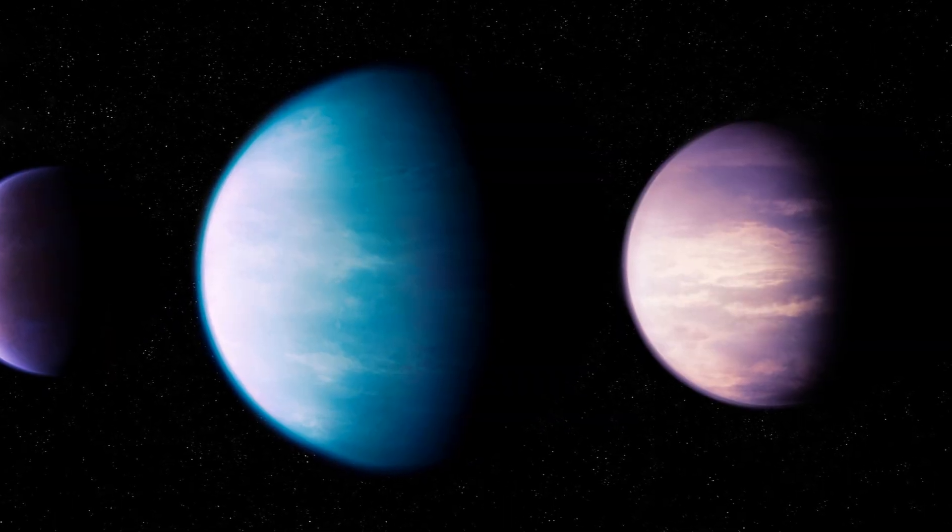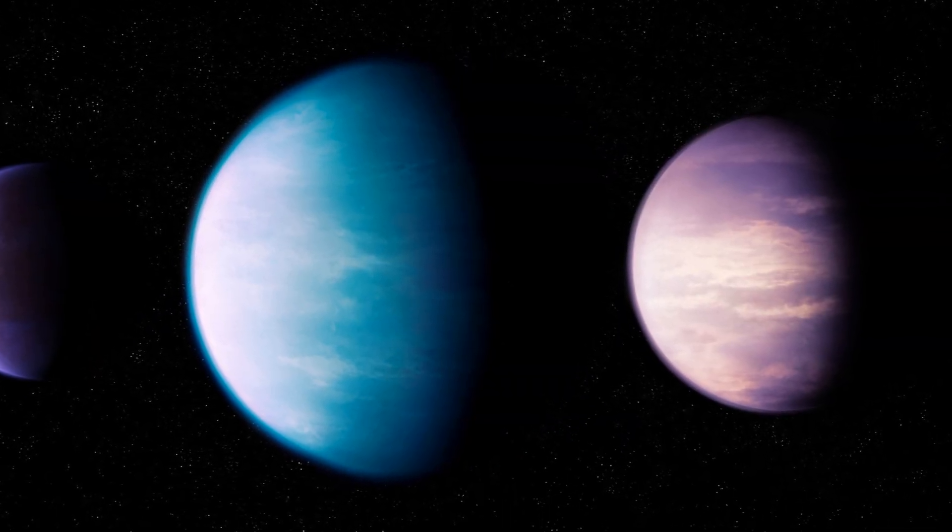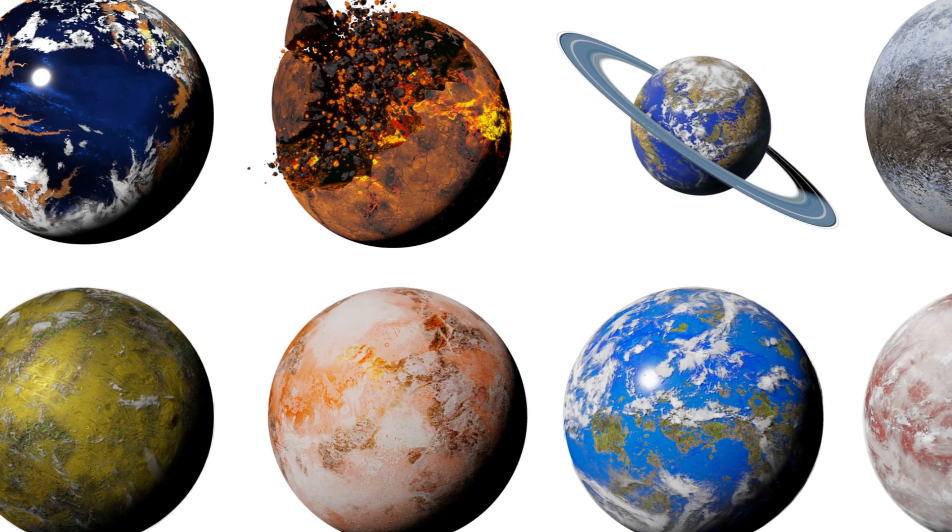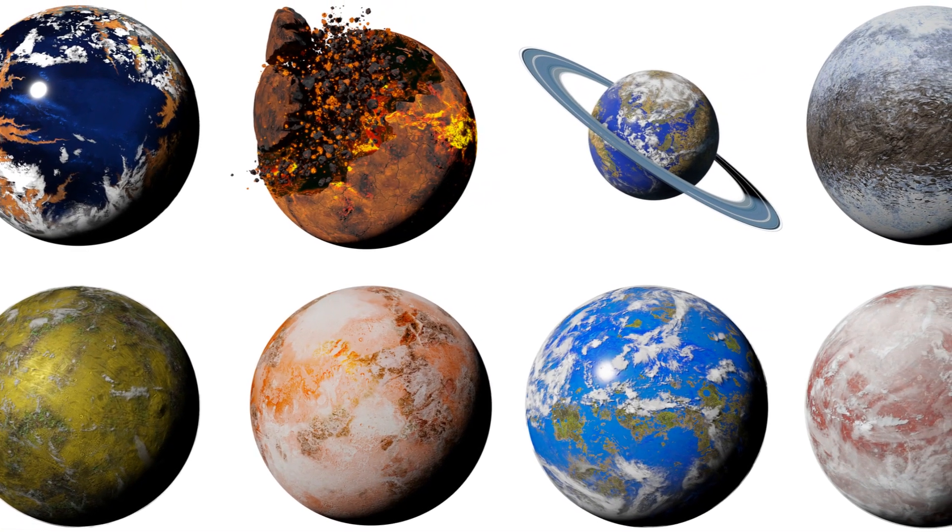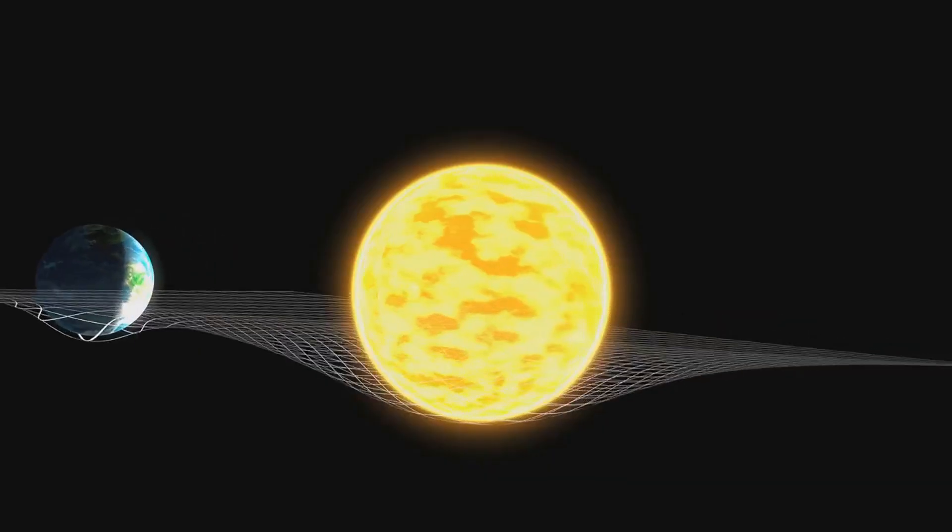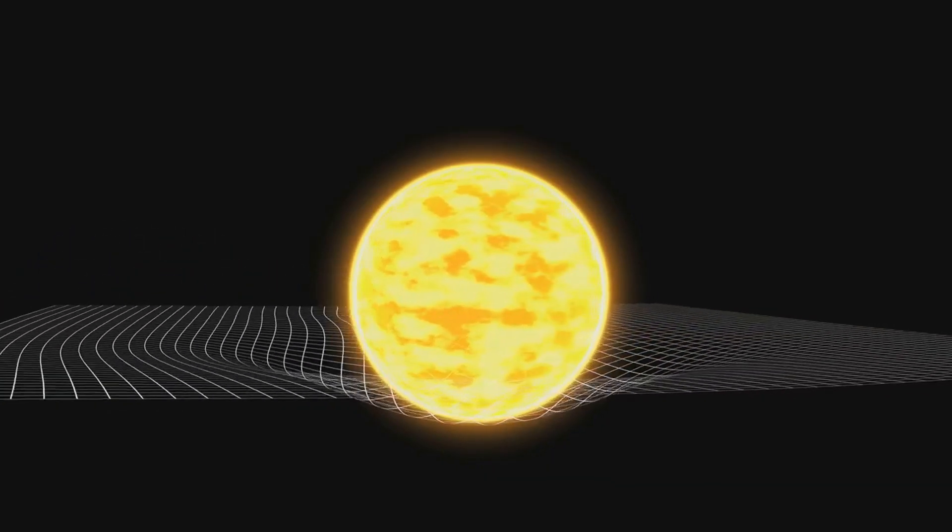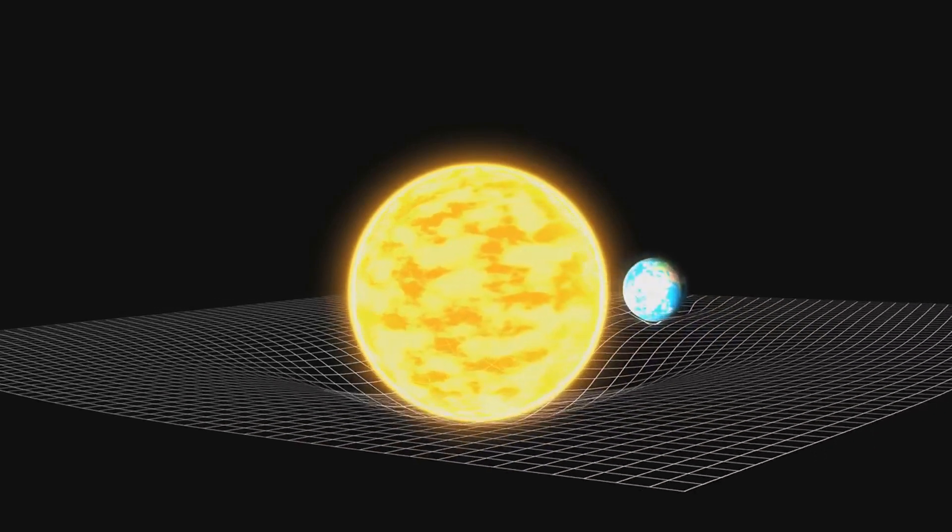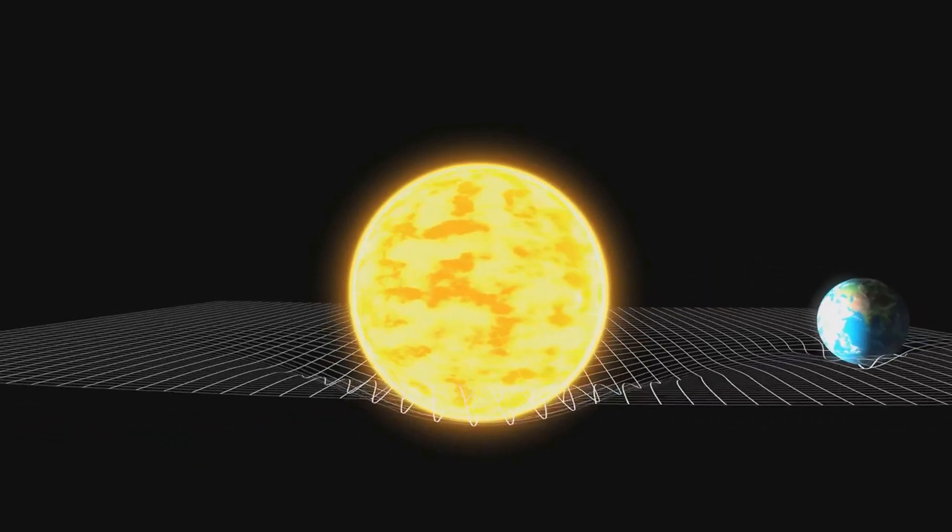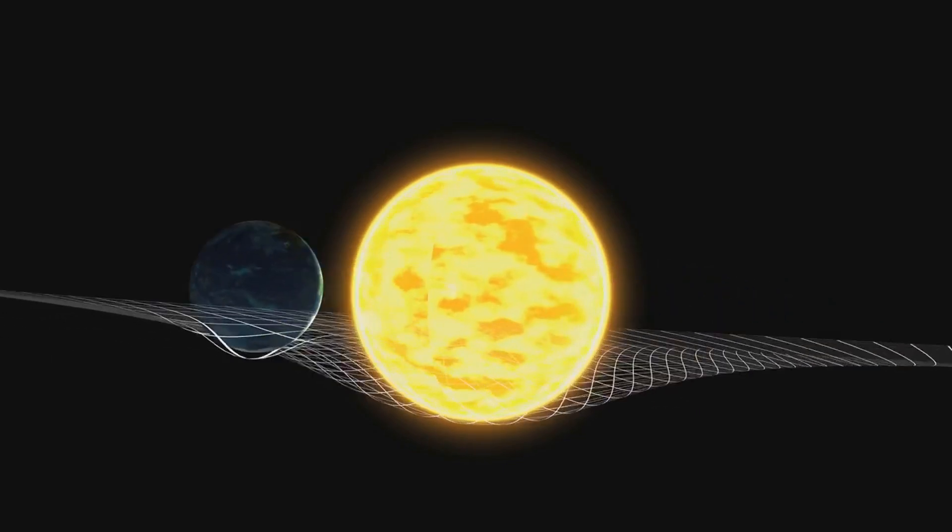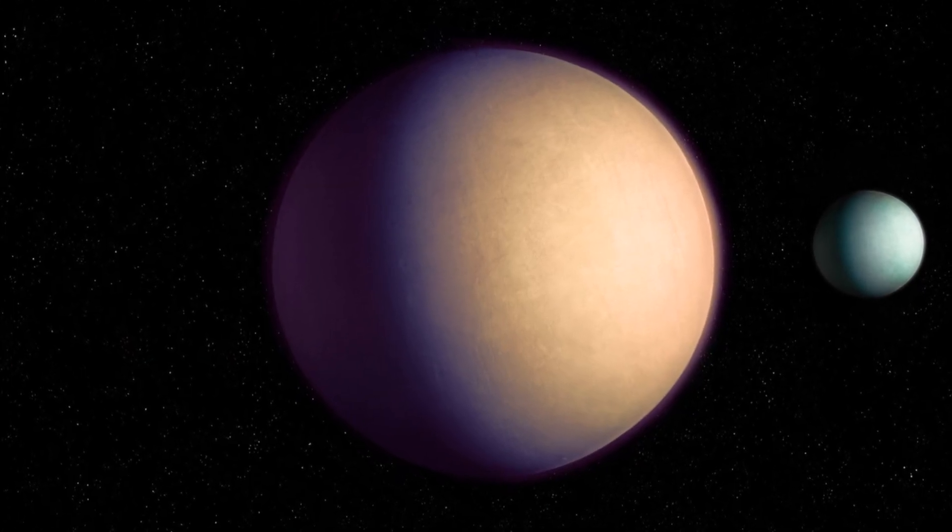HD 40307 G, an exoplanet located about 42 light-years away in the constellation Pictor, has intrigued scientists with its Earth-like qualities. While HD 40307 G is larger than Earth, its gravity is thought to be only slightly stronger. This is due to its larger mass and size, which contribute to a gravitational pull that is just a bit more intense than what we experience here.